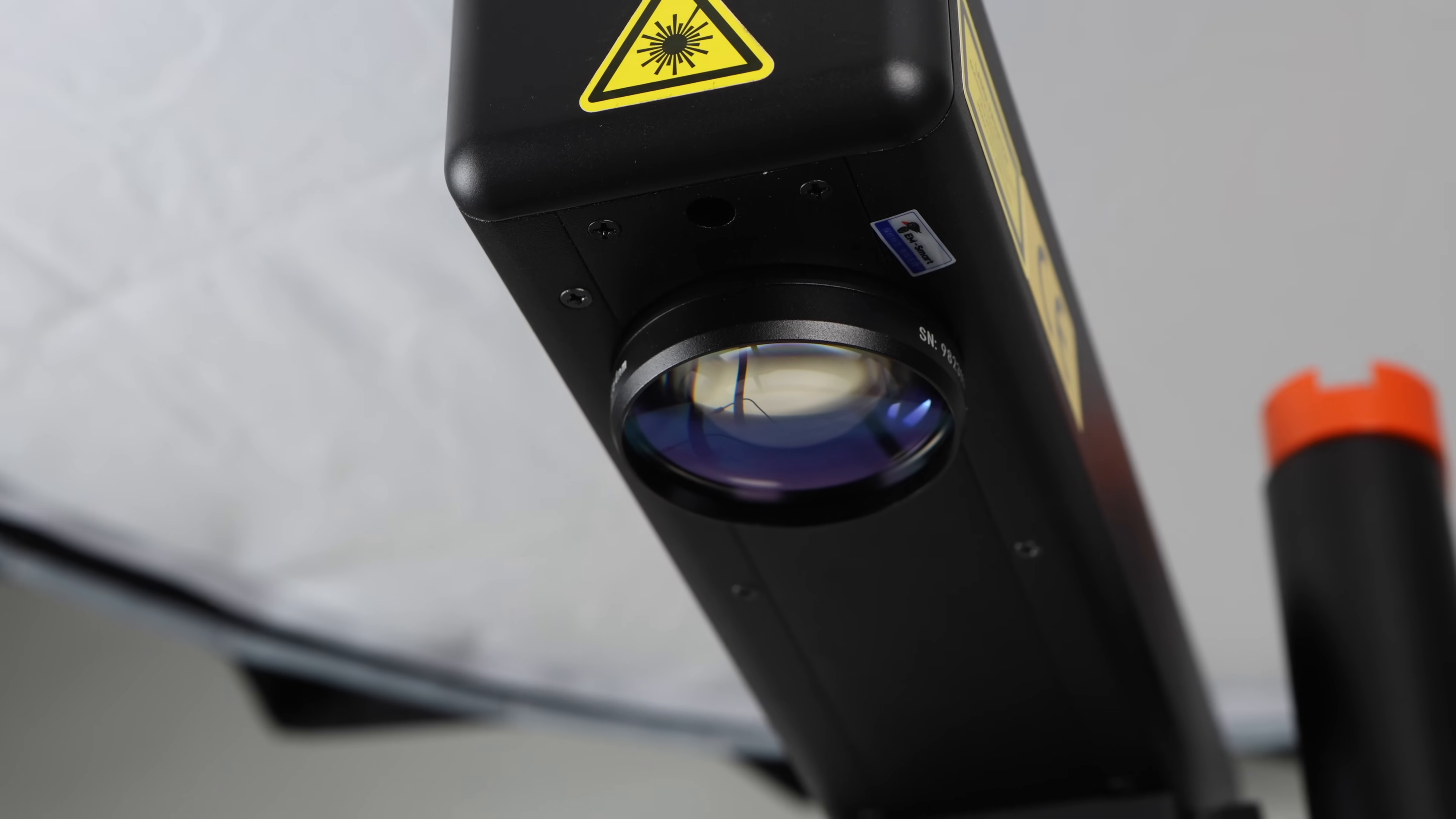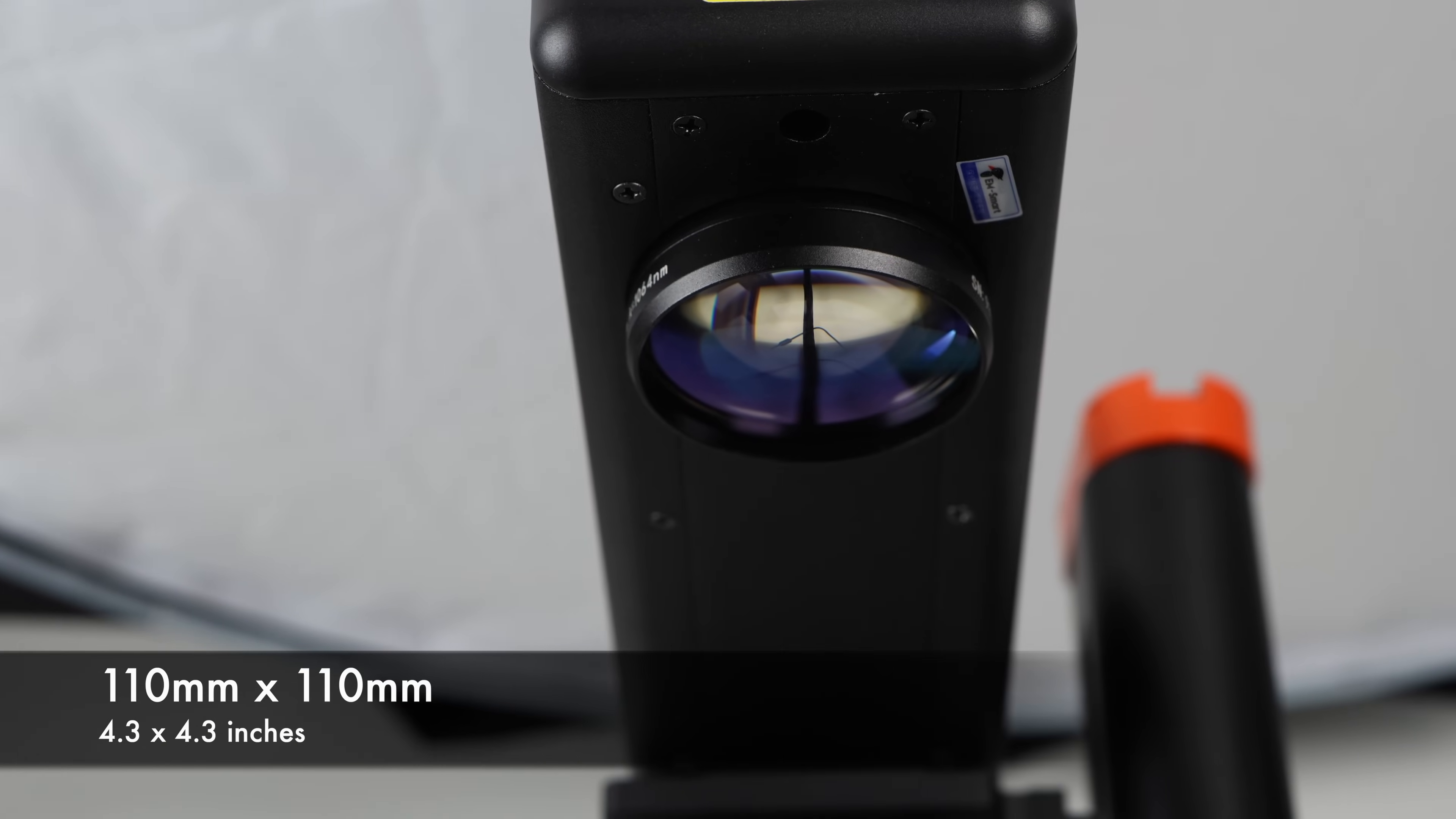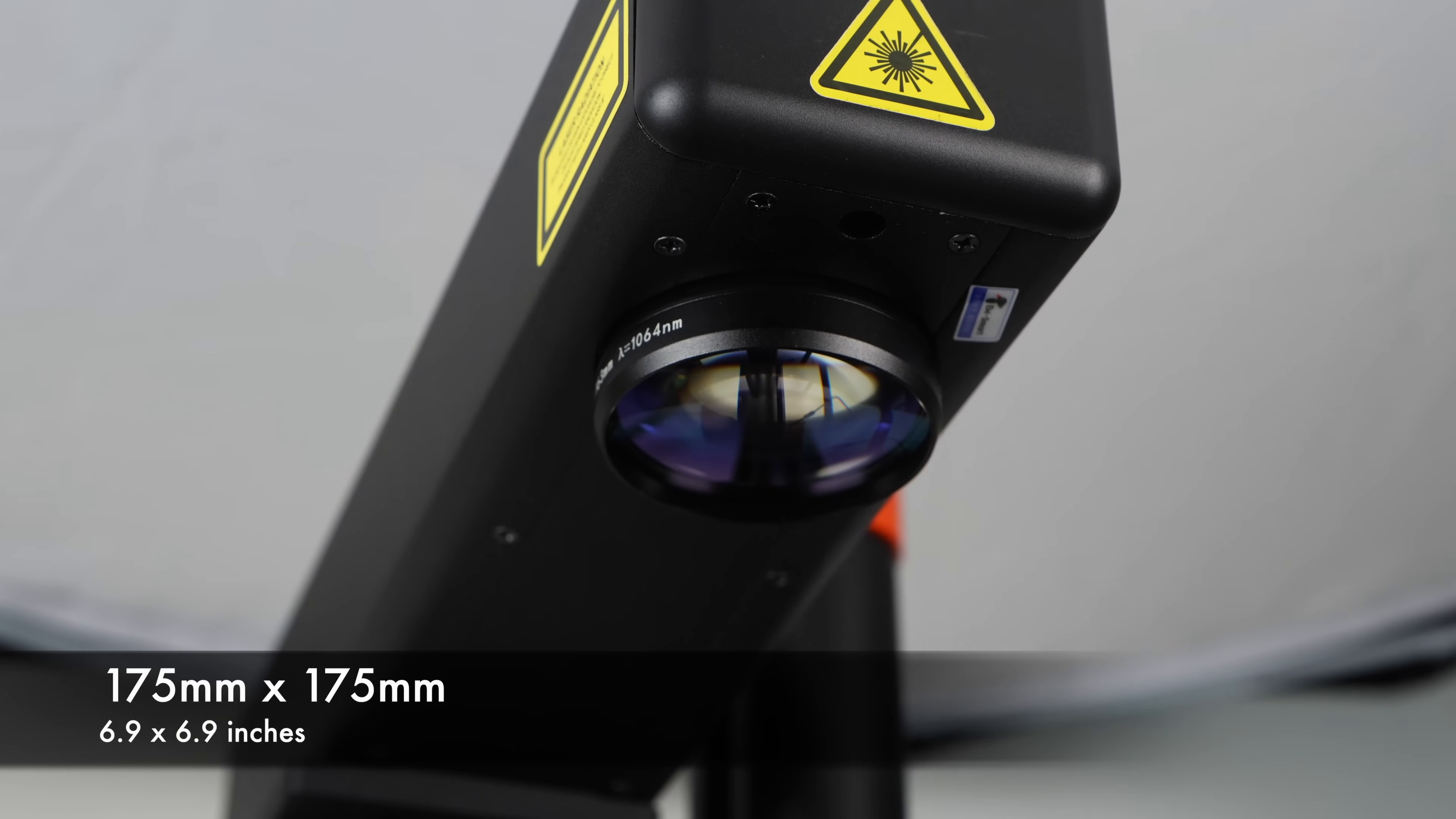The machine ships with a 163 millimeter lens which gives us a working area of 110 by 110 millimeters. Other lenses are available that take the working area up to 175 by 175 millimeters.